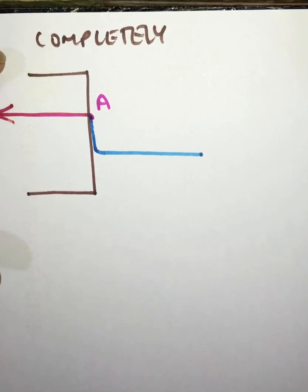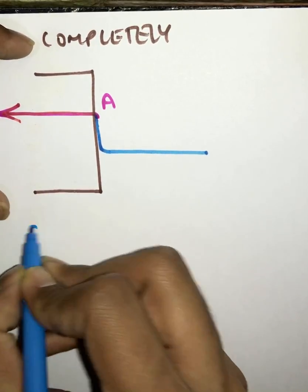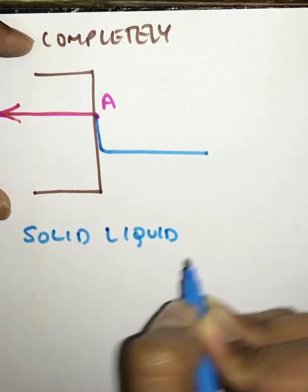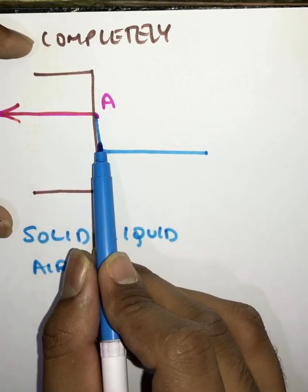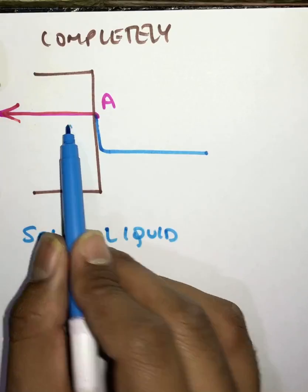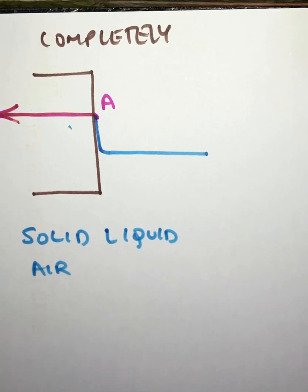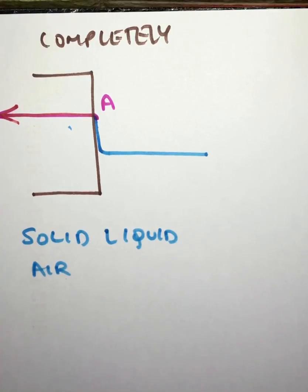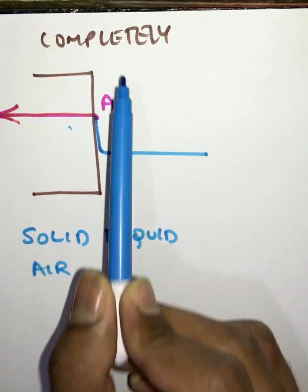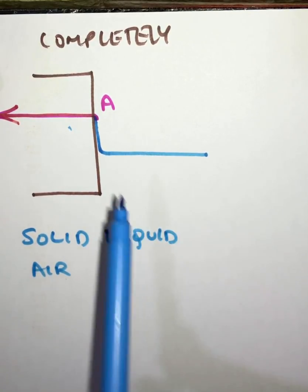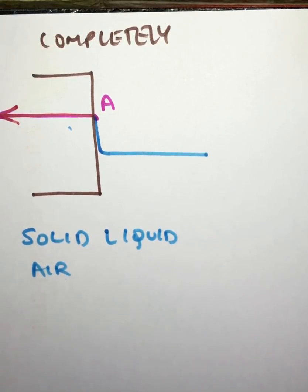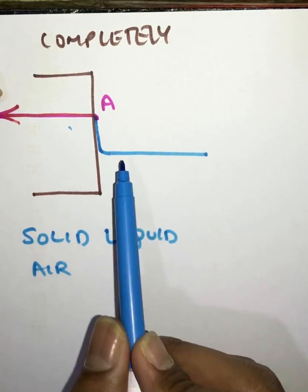Now let's understand the different characteristics of the angle of contact. First, for any given solid-liquid-air combination, the angle of contact remains the same — for example, cotton cloth and kerosene always have the same angle. Second, the angle depends on the nature of the liquid and solid in contact; greater wetting means a different angle. Third, it depends upon the medium existing above the free surface of the liquid — here we consider air molecules.